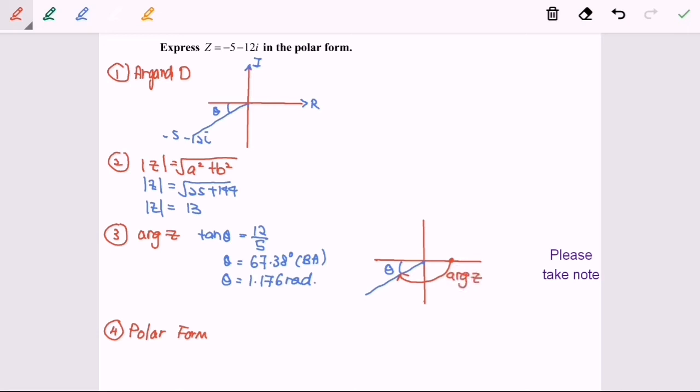So in order to find the argument of Z, it will be negative pi. Why negative pi? Because this is clockwise. So if you follow anticlockwise, it will be positive value. If you follow clockwise, it will be a negative value.